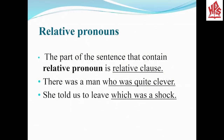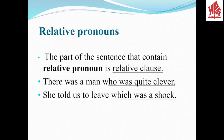The part of the sentence that contains a Relative Pronoun is called a Relative Clause. For example: There was a man who was quite clever — the underlined part starting with who is the Relative Clause. Another example: She told us to leave, which was a shock — the part starting with which is also a Relative Clause.